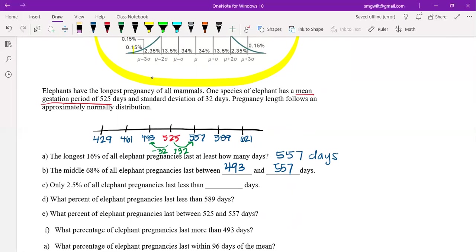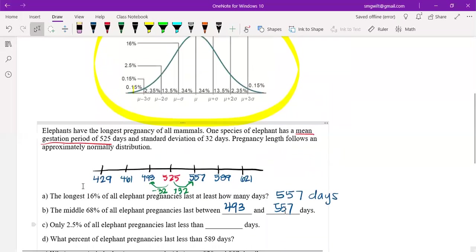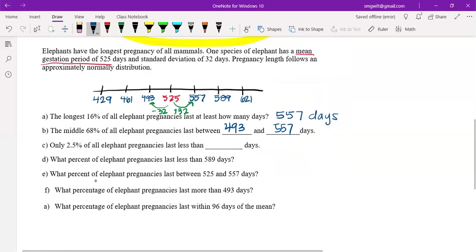Only 2.5% of all elephant pregnancies last less than blank days. So that is going to be a percentile, because the percentiles are the area to the left, the less than area. If I find the 2.5 percentile that's here, notice it's two standard deviations below the mean. So if I look at two standard deviations below the mean, that's this 461 days. So that means that only 2.5% of all elephant pregnancies last less than 461 days.